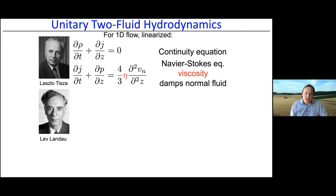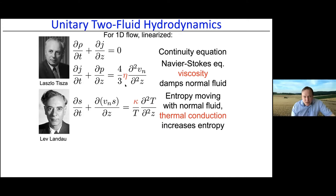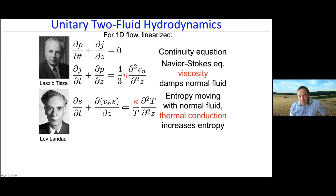The Navier-Stokes equation is modified: the left side remains the same — total current changes in time due to pressure gradients — but dissipation on the right side involves only the normal fluid velocity v_n. The third equation for heat propagation, derived from energy conservation, governs entropy transport: entropy is carried only by the normal fluid velocity, and entropy increases due to thermal conductivity.